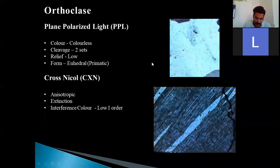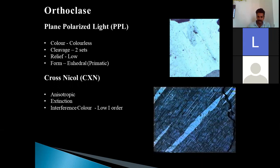If we see the configuration of cross-nicol, orthoclase is anisotropic. Anisotropic means of course it will not turn into black. Extinction is slightly present. You can see over here in the slide or in the picture, you can see the extinction but not a prominent one. So we do not get any prominent extinction in orthoclase. Interference color is low first order.